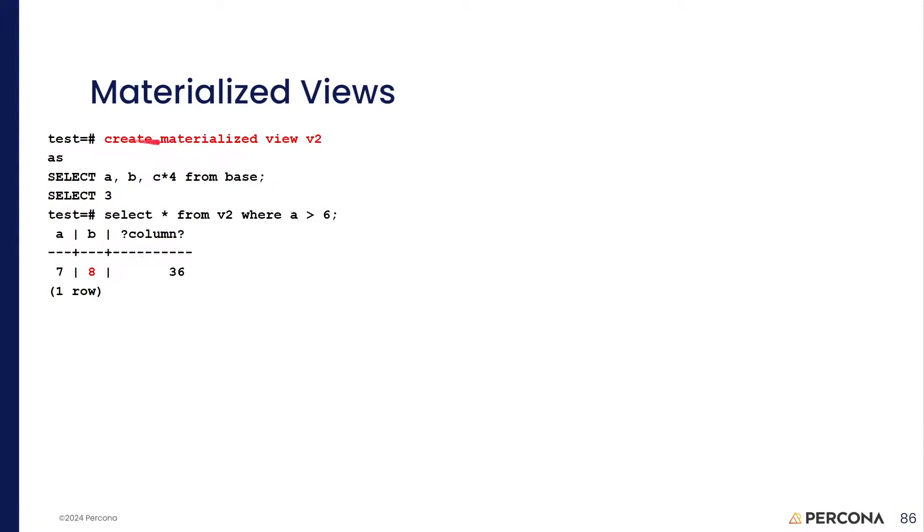So, the difference is you're going to type create materialized view. And this is the same basic view as last time, A, B, and C times 4 from the base table.